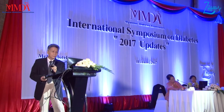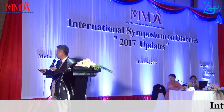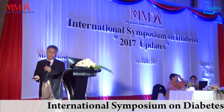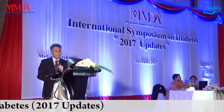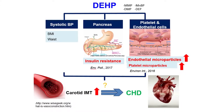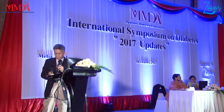Another study demonstrates that DEHP exposure induces MMP2 and MMP9. We found that DEHP at doses higher than 3.5 ppm induced cell migration. In conclusion, DEHP exposure increases insulin resistance, increases endothelial microparticles, causes endothelial dysfunction, and increases carotid IMT. Therefore, the risk to cardiovascular health requires greater attention.